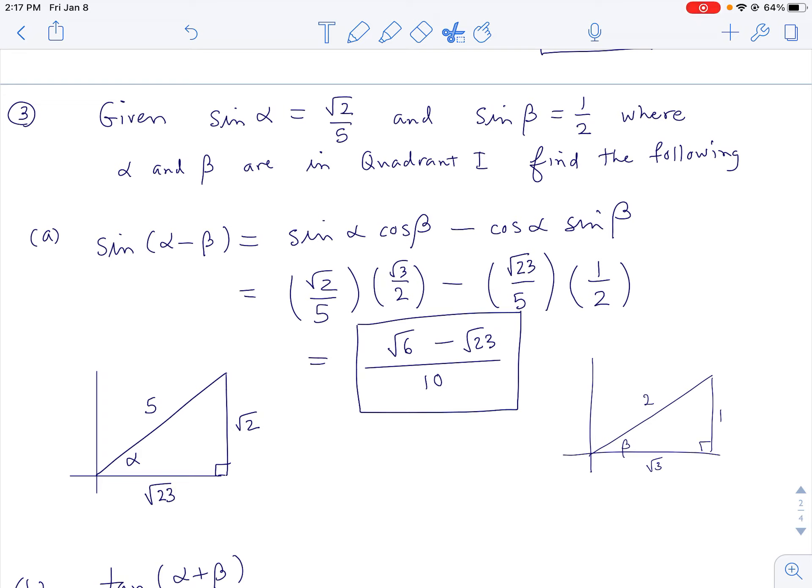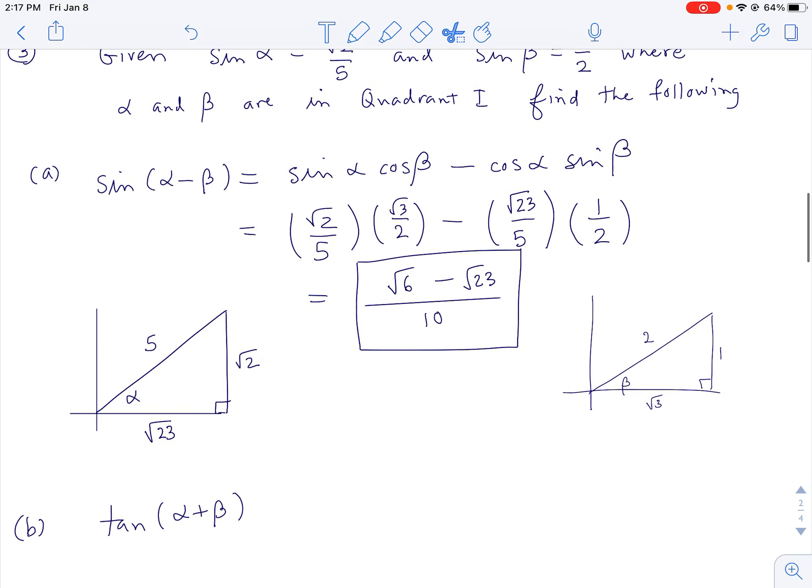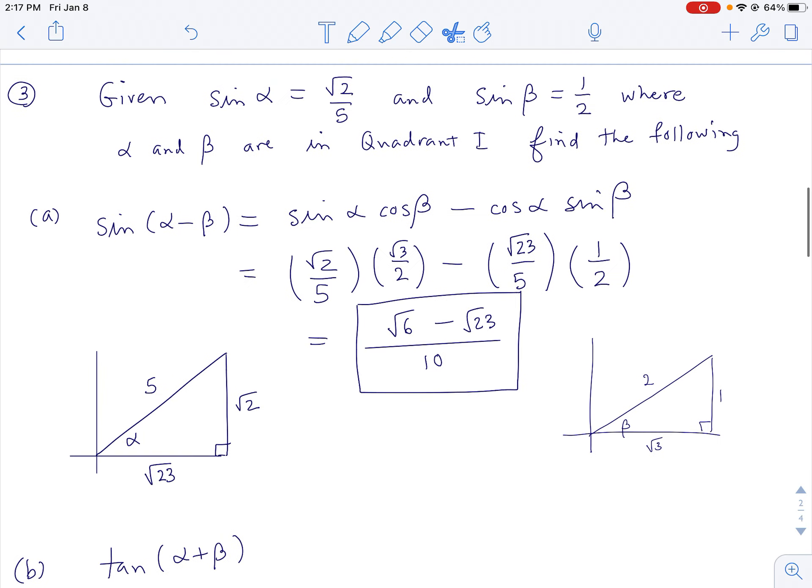Given sine of alpha is root 2 over 5, and sine of beta equals 1 half, find the tangent of alpha plus beta.